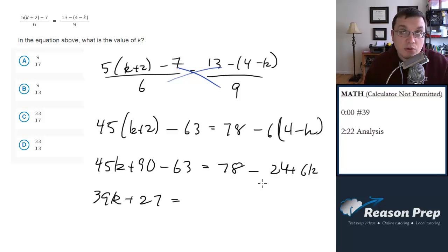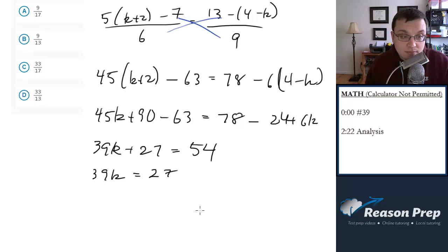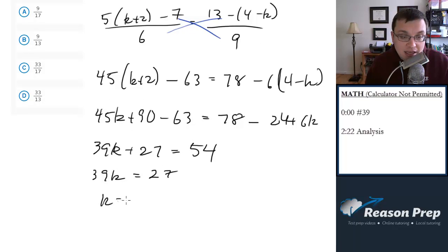And this equals 78 minus 24 equals, wow, 54. A lot of algebra here, or a lot of arithmetic, excuse me. So 39k plus, well, equals 54 minus 27 is 27. So we get k equals 27 over 39.